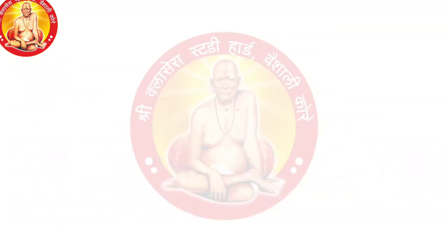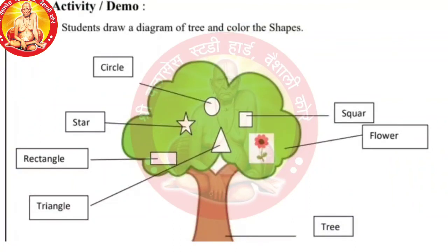These all are the shapes. Now solve the activity, students. Draw the diagram of the tree and color the shapes. Tateni tia ek zhaad dilelie ae ani tumhala tia zhaaadavarcha diagram sa ae, tia la color karaila sangit lela ae. So with the help of pencils or with the help of watercolors.